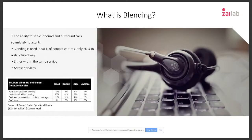Blending in the traditional sense means that an agent can handle both inbound and outbound calls. Everybody wants it and talks about blending, but in reality very few organisations have truly implemented it. Excuses like agents not having all the skill levels are used, but in fact the true reason blending hasn't happened is technology. The queuing systems, where people are all linked to specific queues and specific services, make it very difficult to do true blending.